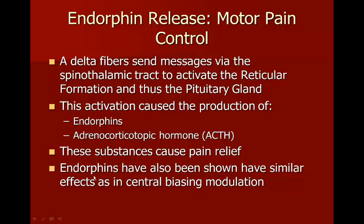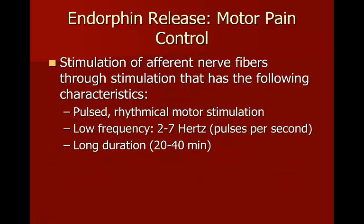This activation causes the production of endorphins and ACTH — adrenocorticotropic hormone — which cause pain relief. Endorphins have also been shown to have similar effects as in central biasing modulation. Stimulation of afferent nerve fibers requires a pulsed rhythmic motor stimulation at low frequencies — usually 2 to 7 Hertz — and a long duration of 20 to 40 minutes. You set the patient up so that when you turn on the e-stim, the muscle actually contracts rhythmically in a pumping motion, and a visible muscle contraction should be seen.